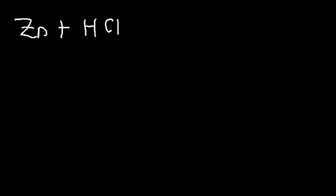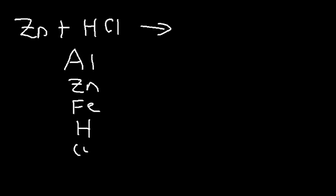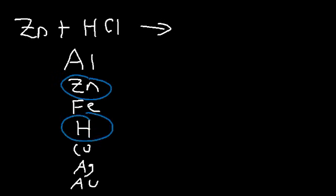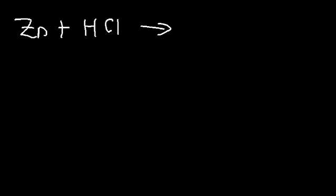Now let's try another example: the reaction between zinc metal and hydrochloric acid. What are the products? First, is zinc strong enough to displace hydrogen out of the solution? On the activity series, below aluminum you have zinc, then Fe, then hydrogen, copper, silver, and gold. Zinc is above hydrogen, so zinc is strong enough to displace hydrogen out of the solution. This reaction will work.